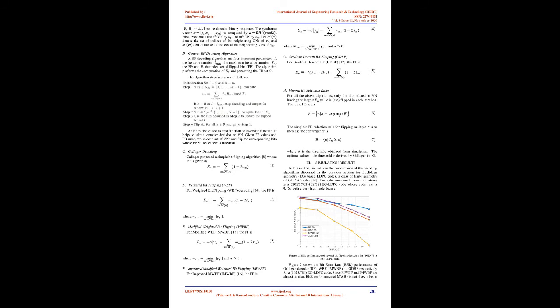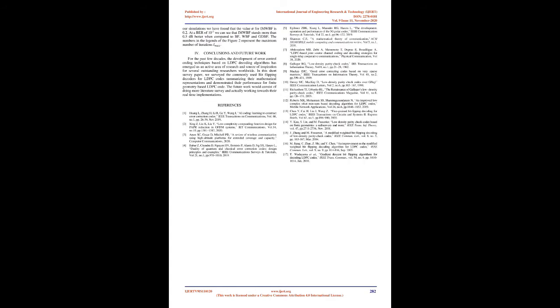C. Gallagher Decoding: Gallagher proposed a simple bit-flipping algorithm whose FF is given as Equation 1, defined in terms of the syndrome values of the neighboring CNs. D. Weighted Bit Flipping, WBF: For weighted bit flipping, WBF, decoding, the FF is given as Equation 2, where the weighting factor incorporates the magnitude of received soft values. E. Modified Weighted Bit Flipping, MWBF: For modified WBF, MWBF, the FF is given as Equation 3, where an additional offset term is included.